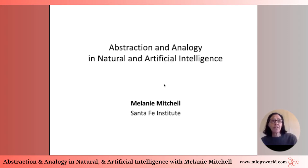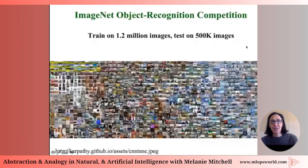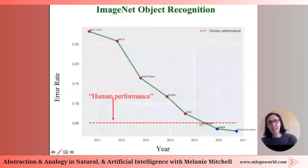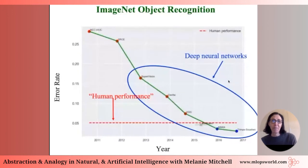Deep neural networks spurred a revolution in AI based on ideas from how the visual system in the brain works — a hierarchical set of layers in which information is processed from lower levels to higher levels, resulting in probability distributions over possible concepts. This was shown in particularly impressive fashion in the ImageNet object recognition competition, where neural networks competed to classify objects, and the error rate dropped until it was lower than estimated human performance.